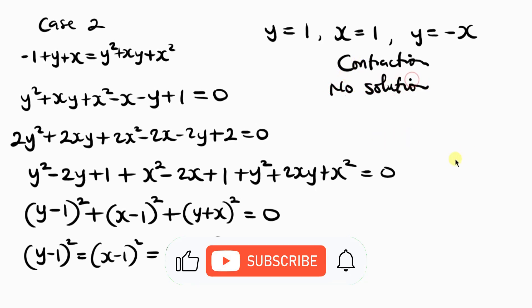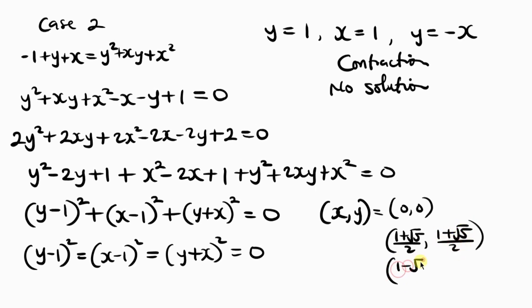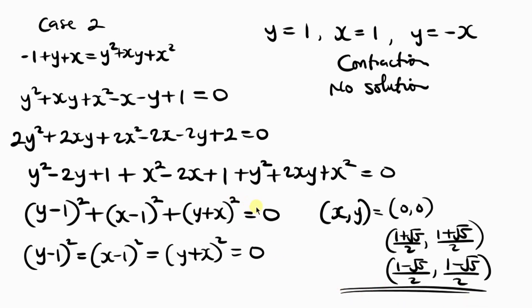So our only solutions are those from Case 1: x and y equal 0, 0; x and y both equal 1 plus square root of 5 over 2; and x and y both equal 1 minus square root of 5 over 2. These are the only three possible solutions. If you have a better or quicker way of solving this question, go ahead and share it in the comment section.